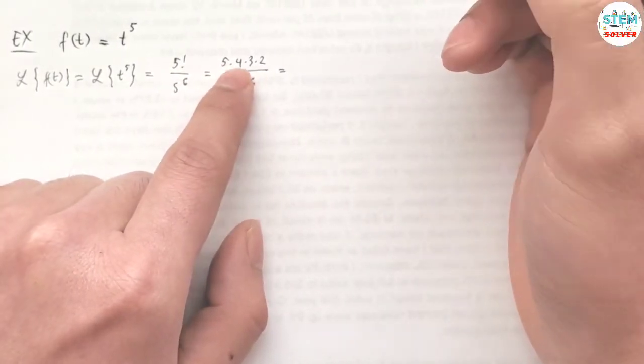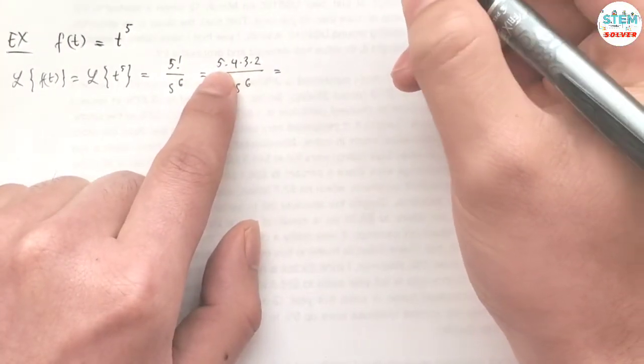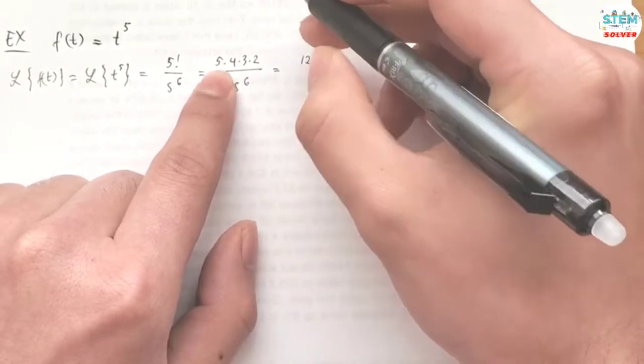This gives me, let's see: 4, 6, 24... 24 times 5 is 120. I believe so.